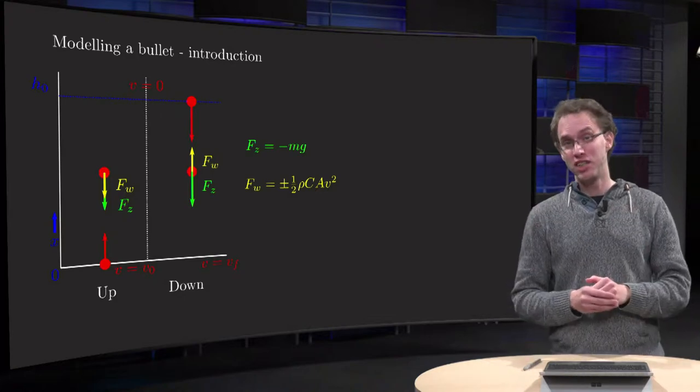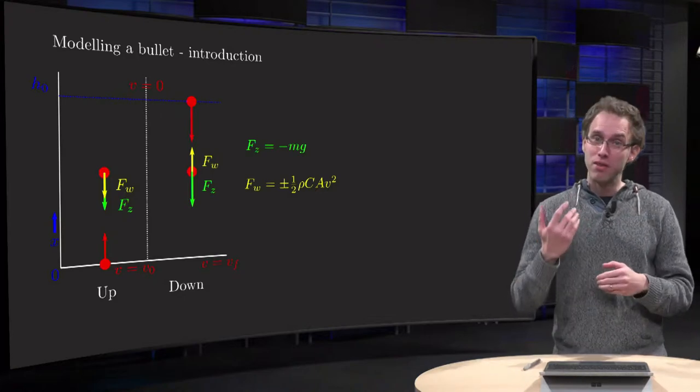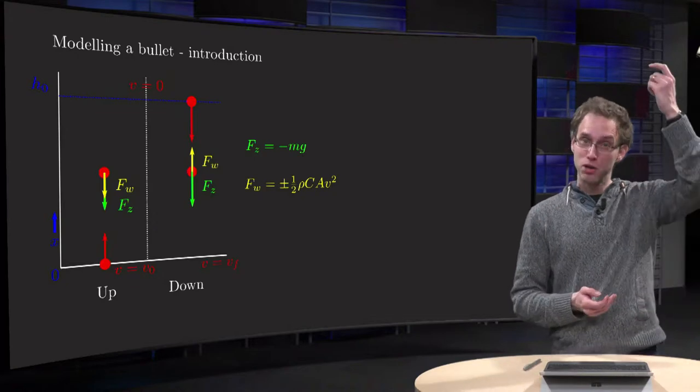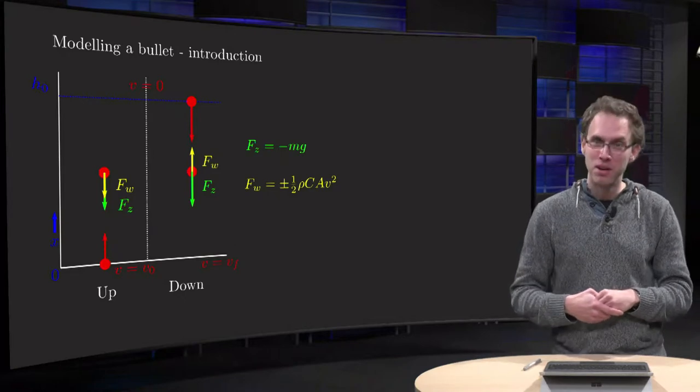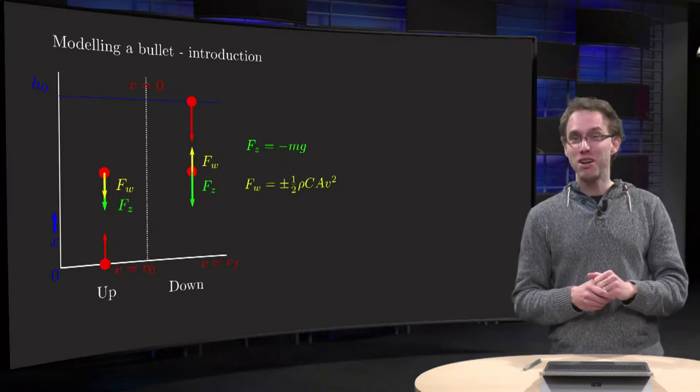In absence of friction the result is clear. We have conservation of energy, so when the bullet returns, its speed will equal the firing speed, so the bullet will kill you. But what happens if we include friction?